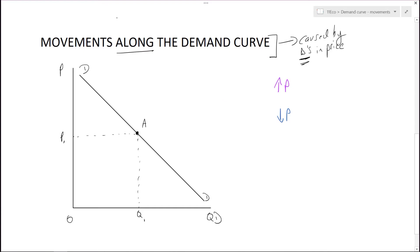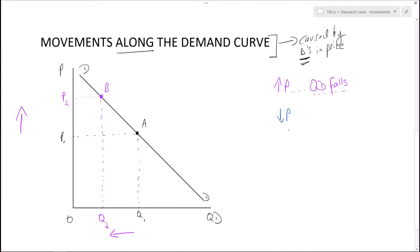Purple will show us the increase in price, and blue will show us the decrease. So let's start with purple. If price increases — and numbers going away from zero are getting bigger — that results in things moving this way along the curve. Let's say we're now at point B, which is price two. We can see that while price one equated with Q1, when this higher price hits the demand curve, consumers now want Q2. So when there is an increase in price, quantity demanded falls.